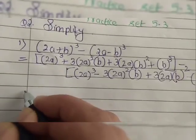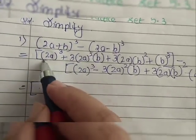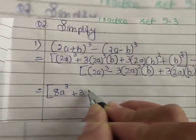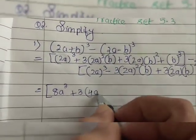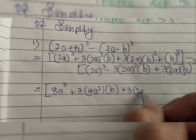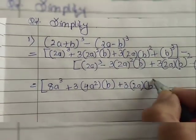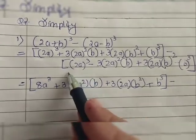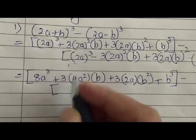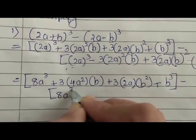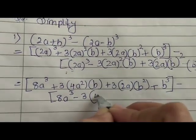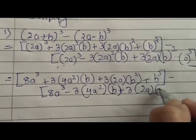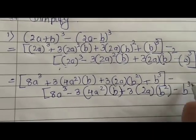We open the bracket again. The cube of 2a gives 8a³. Keeping the coefficient 3 as it is, the square of 2a gives 4a², multiplied by b. Then the square of b gives b², and the cube of b gives b³. Similarly, we open the other bracket in the same way — cube of the term, square of the term, b², and b³.